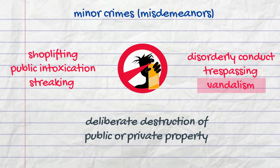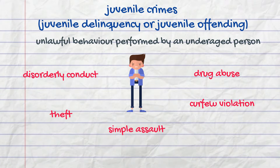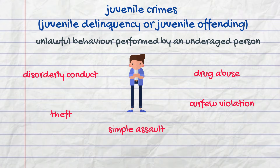Juvenile crimes, also known as juvenile delinquency or juvenile offending, are understood as acts of unlawful behavior performed by an underage person. According to some statistics, almost half of all arrests of juvenile delinquents are made on account of disorderly conduct, theft, simple assault, drug abuse, and curfew violation.